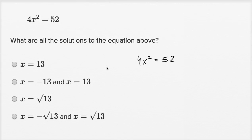Well if we want to solve for x, we can just divide both sides by 4. And then we get x² = 52 divided by 4, which is 13.